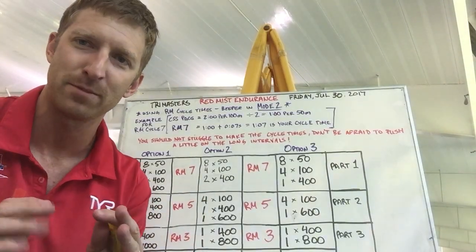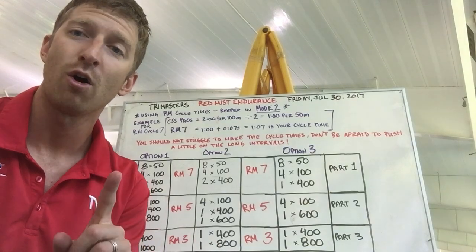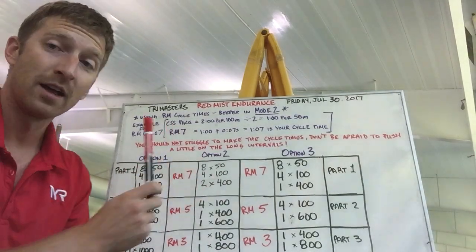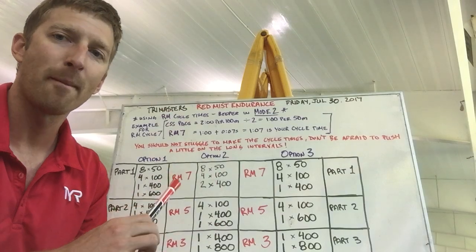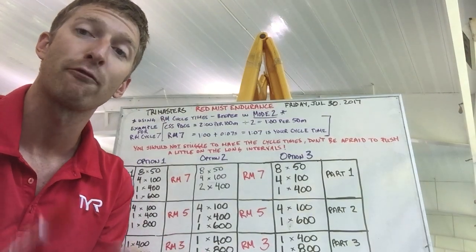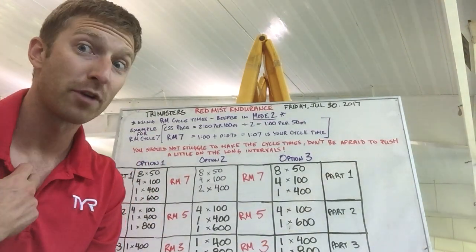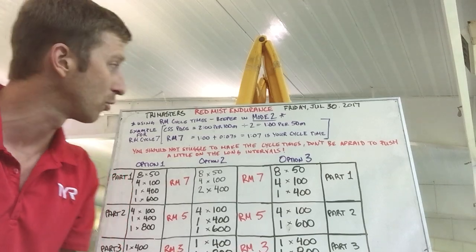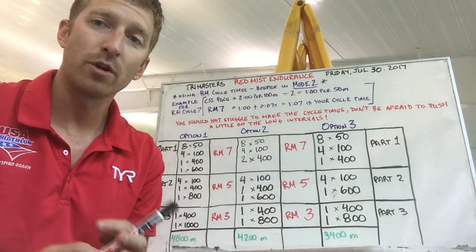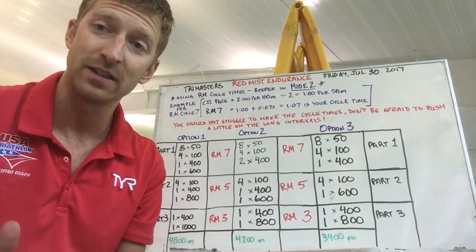It's not quite 50 meters. So let me explain: RM cycles work like this. The easiest way to determine your RM cycles — always start with your CSS pace. Let's say for example your CSS pace, your threshold pace, is two minutes per 100. So CSS pace equals two minutes per 100. The way we arrive at your RM cycle is: we take two minutes, divide that in half — divide by two — so that's one minute per 50.